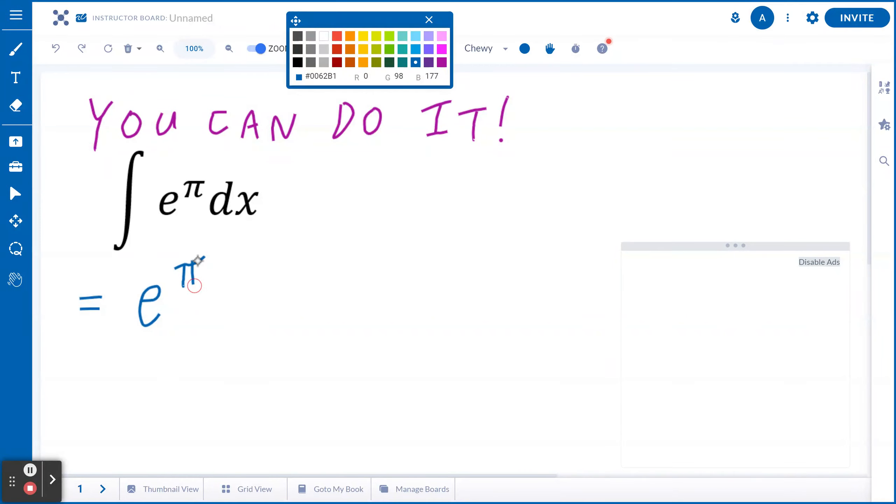Step number one, bring the constant e to the power of pi to the front, which means this becomes e to the power of pi times the antiderivative of one with respect to x.